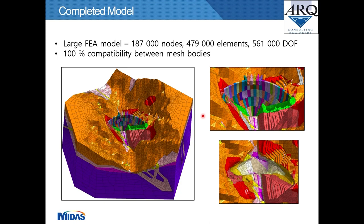The completed model clearly shows a smooth mesh transition from fine mesh at the dam and immediate foundation to a coarse mesh at the outer extents, becoming even coarser toward the lower outer extents. Each mesh set is assigned colors according to the foundation properties for ease of use and user friendliness. The large finite element model comprises 187,000 nodes, 479,000 elements, and 561,000 degrees of freedom, with 100% compatibility between all mesh sets — achieved through the MIDAS auto-mesher algorithm without requiring contact elements.